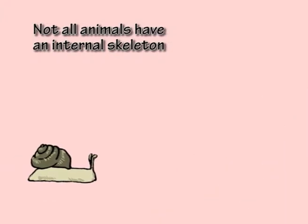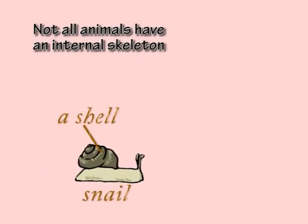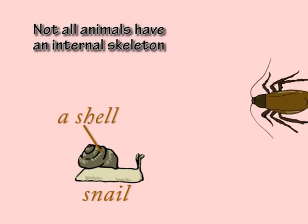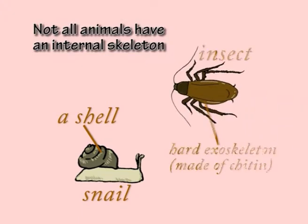Not all animals have an internal skeleton. For example, a snail has a shell. And similarly, insects have a casing of hard material on the outside, called an exoskeleton, to protect and support their bodies.